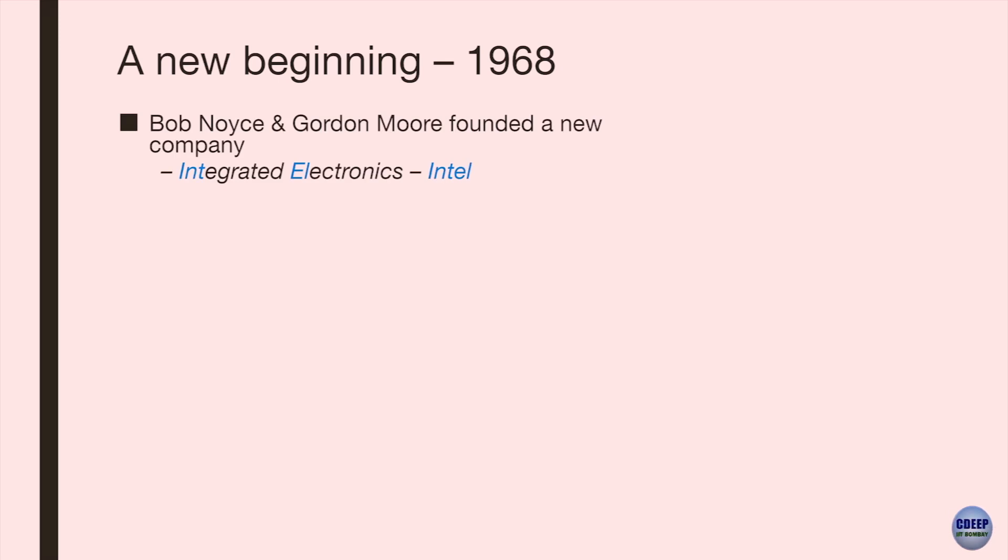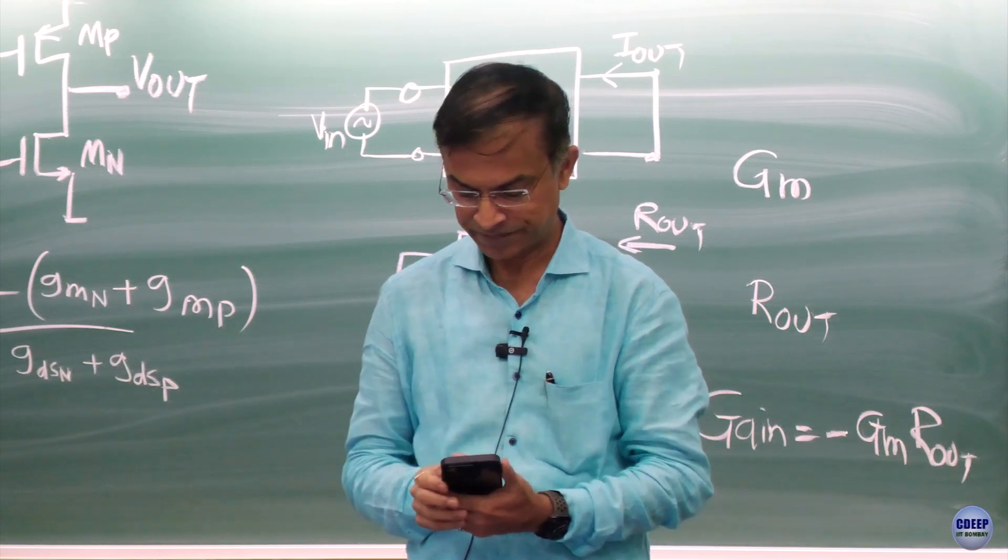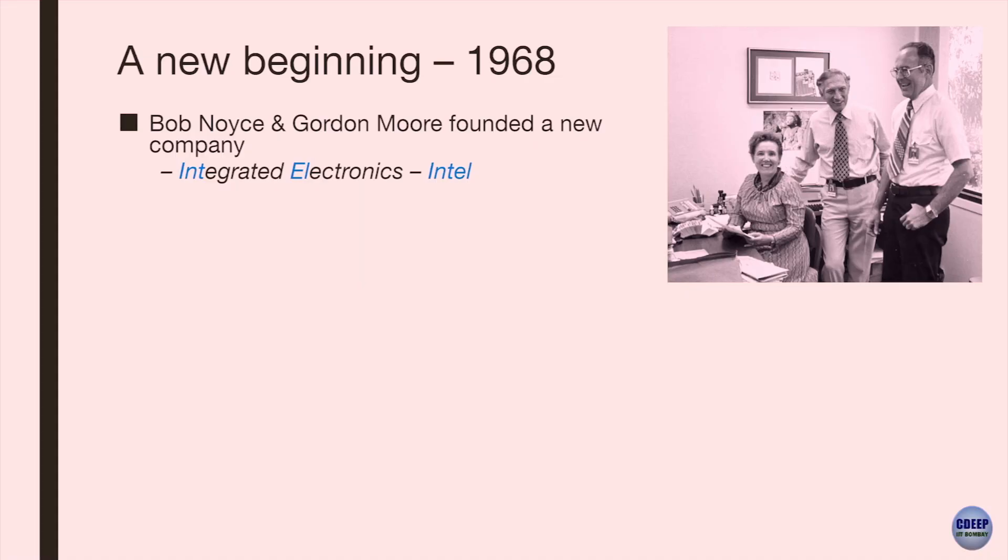Bob Noyce, Gordon Moore, they founded a new company. And the name of the company was Integrated Electronics or Intel. And this is Bob Noyce and Gordon Moore. And I think that's Jones in the picture. She was a temp. She joined them to help them as temp, but ended up staying for 27 years at Intel. So, interesting story in the Intel. So, all the stuff that I'm collecting is from different places. This is from the Intel Museum that I'm telling you.